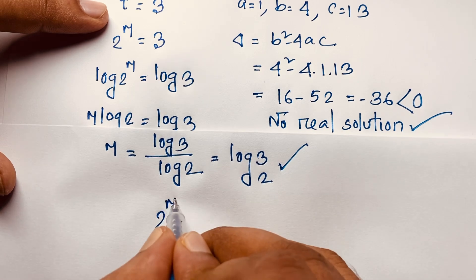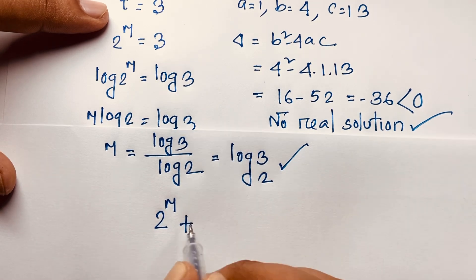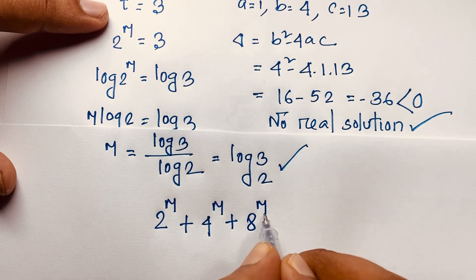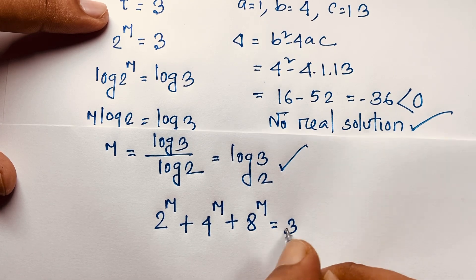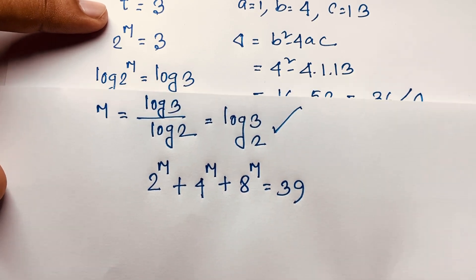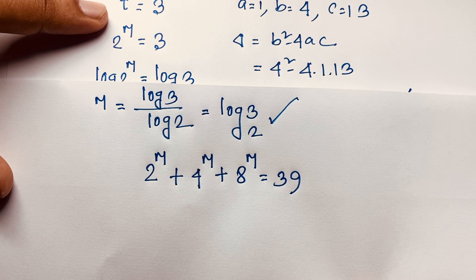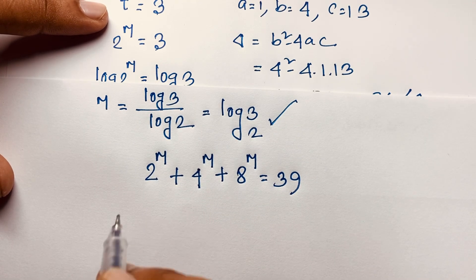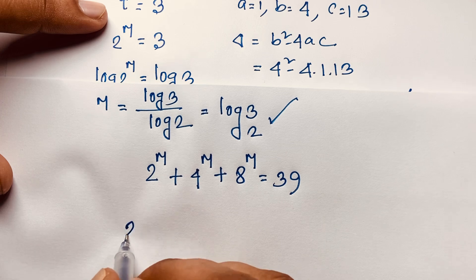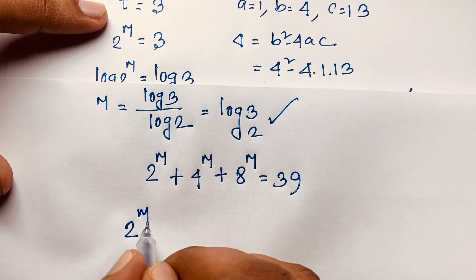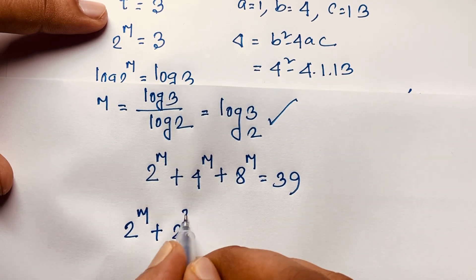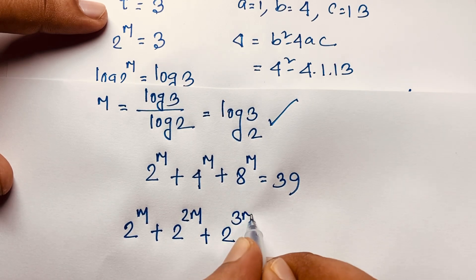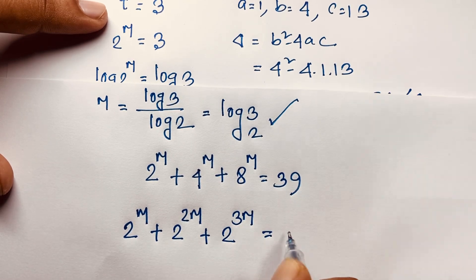Let's verify our answer with the original question: 2 to the power m plus 4 to the power m plus 8 to the power m equals 39. Since m equals log base 2 of 3, we have 2^m equals 3, then 4^m equals 2 to the power 2m equals 3 squared equals 9, and 8^m equals 2 to the power 3m equals 3 cubed equals 27.